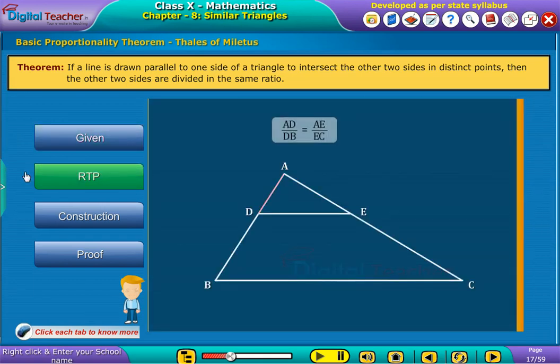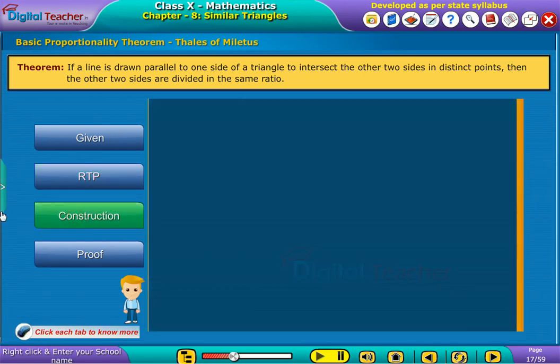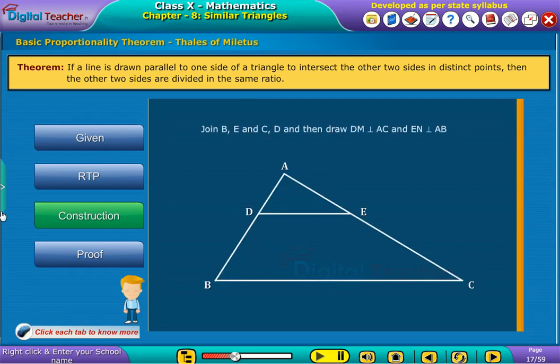Required to prove that AD by DB is equal to AE by EC. Construction: Join BE and CD and draw DM perpendicular to AC and EN perpendicular to AB as shown.